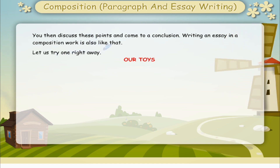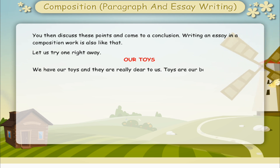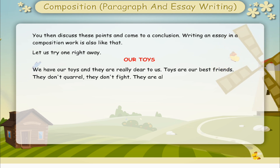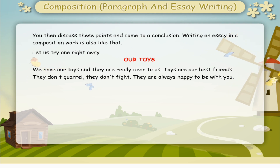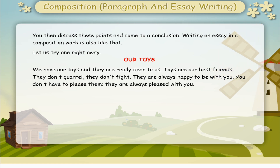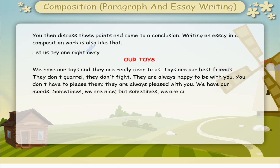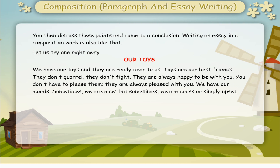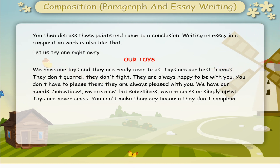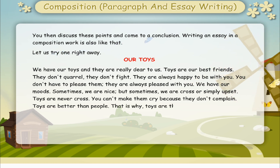Our toys. We have our toys and they are really dear to us. Toys are our best friends. They don't quarrel. They don't fight. They are always happy to be with you. You don't have to please them. They are always pleased with you. We have our moods. Sometimes we are nice, but sometimes we are cross or simply upset. Toys are never cross. You can't make them cry because they don't complain. Toys are better than people. That is why toys are the best as friends.